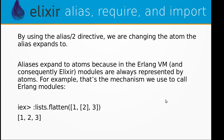By using the alias directive we are changing what atom the alias expands to. Aliases expand to atoms because in the Erlang virtual machine — and consequently Elixir — modules are always represented by atoms. For example, that's the mechanism we use to call Erlang modules: :lists.flatten([1, 2, [3]]).